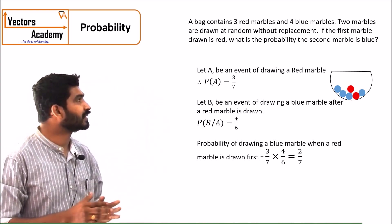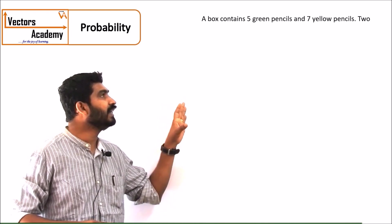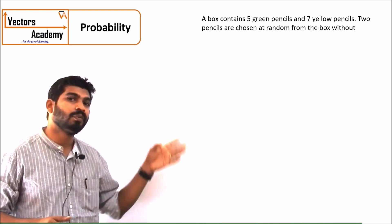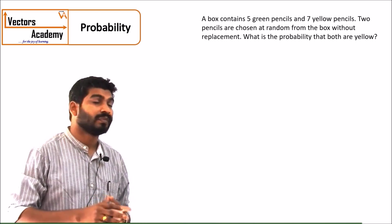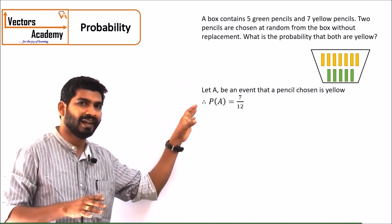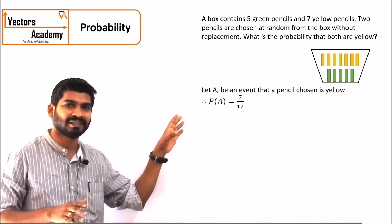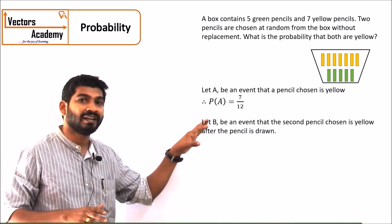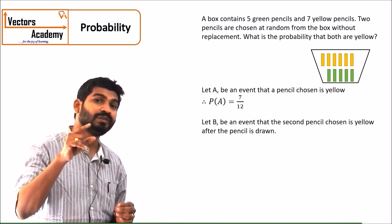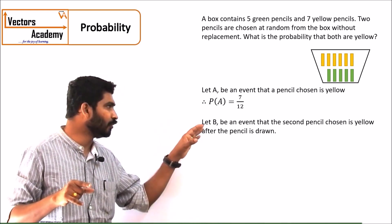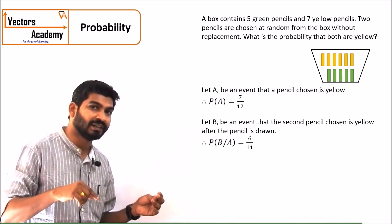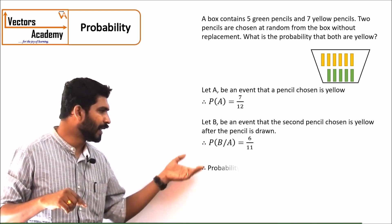Now another question of this type: there is a bag containing 5 green and 7 yellow pencils. If 2 pencils are drawn, we have to find the probability that both are yellow. The probability that the first pencil drawn is yellow is 7 by 12. Once drawn, the bag contains just 11 pencils with 6 yellow remaining, so the probability of the second pencil also being yellow is 6 by 11. The final probability is their product.